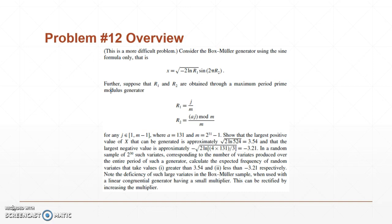The problem says to show the largest positive value of x that can be generated is approximately 3.54, and that the largest negative value is approximately negative 3.21. In a random sample of 2 to the 30th such variates corresponding to the entire period of such a generator, calculate the expected frequency of random variates that take values greater than 3.54 and less than negative 3.21, respectively.